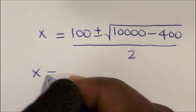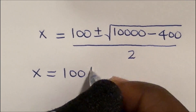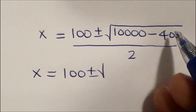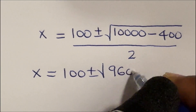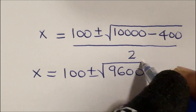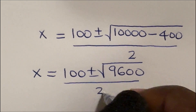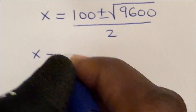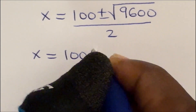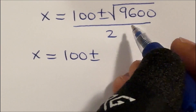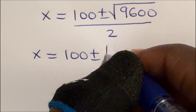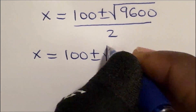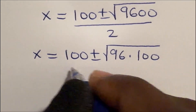So x is equal to 100 plus or minus the square root of 10,000 minus 400, which gives us 9,600, divided by 2.